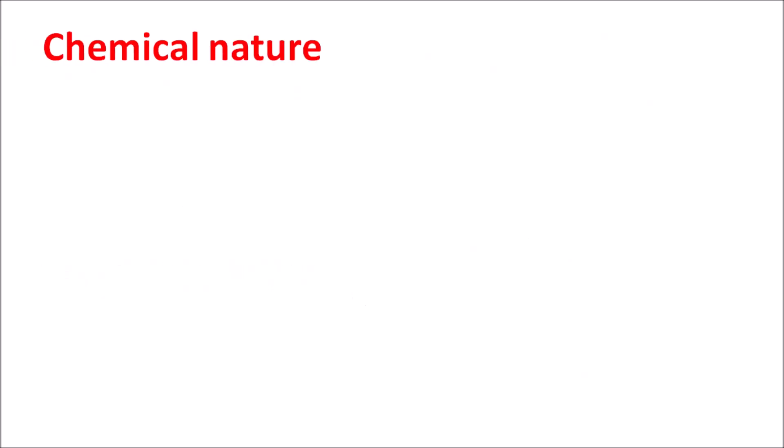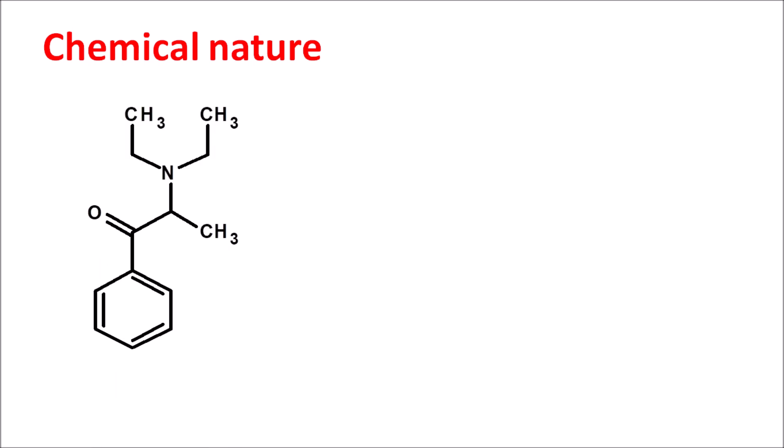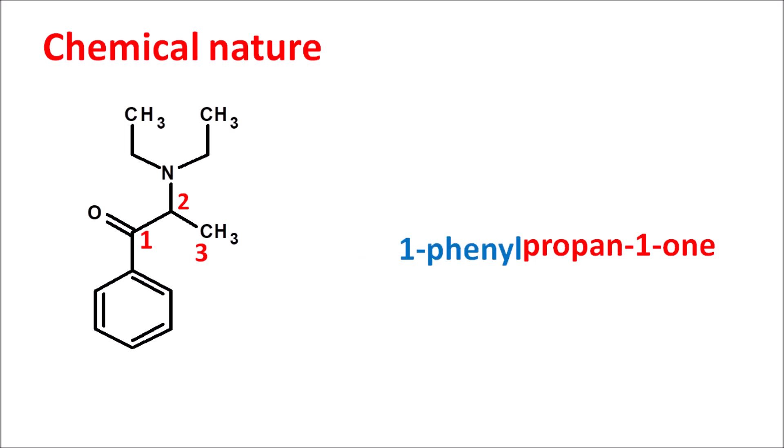Now let us see the chemical nature of this drug. This is the simple structure of diethylpropion. Here we can see the ketone group is present, which is attached to the phenyl group. So this drug is also classified chemically as a phenone. Now let us give the numbering — we can start the numbering from the ketone group: 1, 2, and 3. According to IUPAC we can give the name as 1-propanone or propane-1-one. At the first position it has the phenyl group, so 1-phenyl, and at the second position it has the amine group which is further attached with the diethyl groups — so 2-diethylamino. That is the simple name of diethylpropion: a diethylaminopropanone derivative.